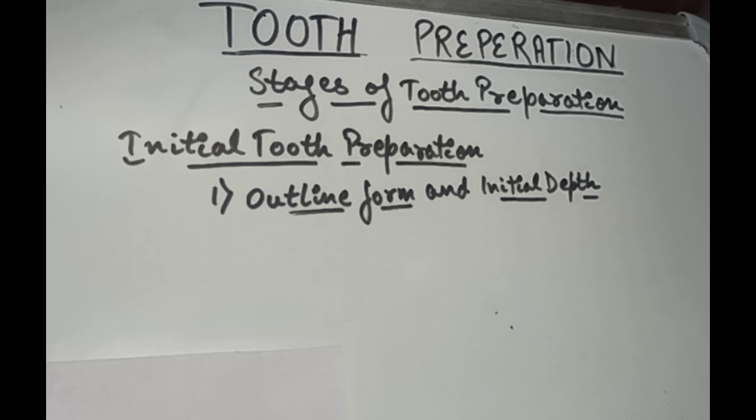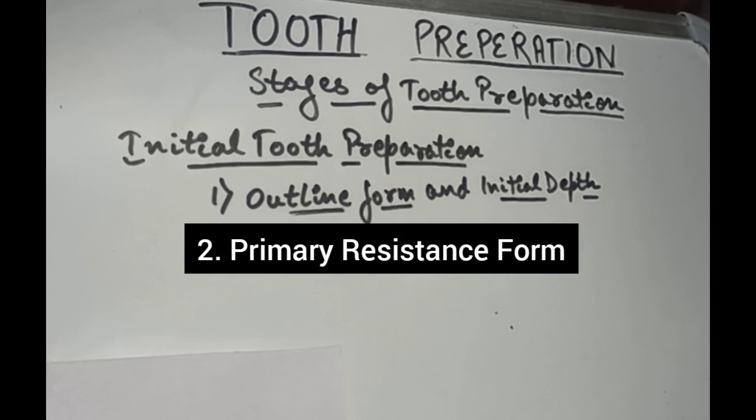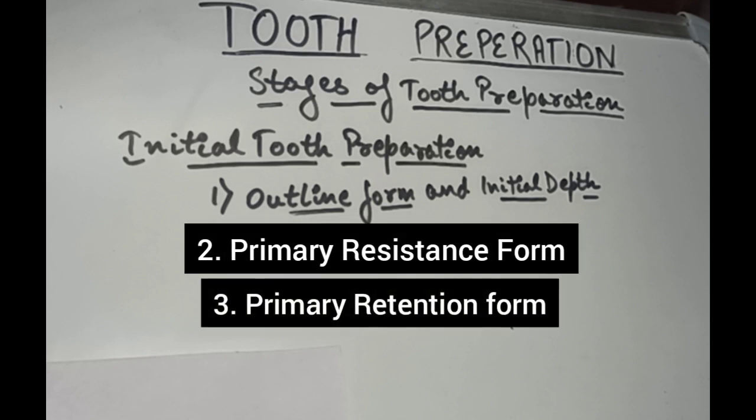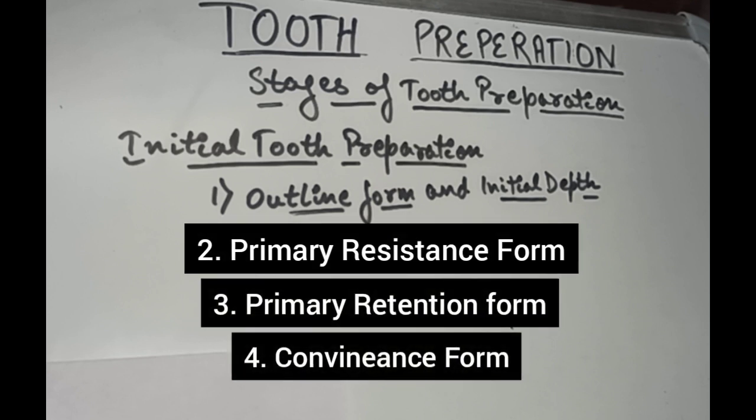First let's see the initial tooth preparation. It involves the outline form and initial depth, the primary resistance form, the primary retention form, and the convenience form.